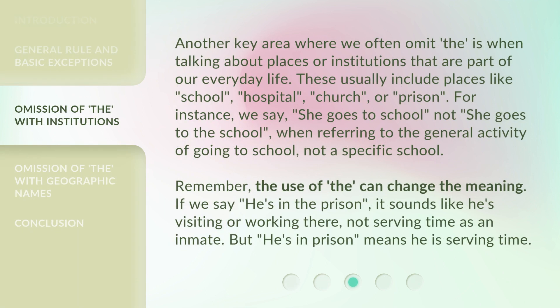Another key area where we often omit "the" is when talking about places or institutions that are part of our everyday life. These usually include places like school, hospital, church, or prison. For instance, we say "she goes to school," not "she goes to the school," when referring to the general activity of going to school, not a specific school. Remember, the use of "the" can change the meaning. If we say "he's in the prison," it sounds like he's visiting or working there, not serving time as an inmate. But "he's in prison" means he is serving time.